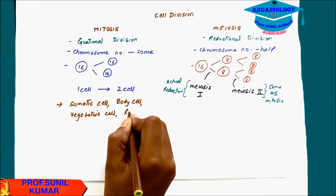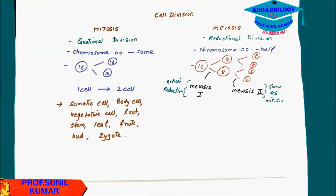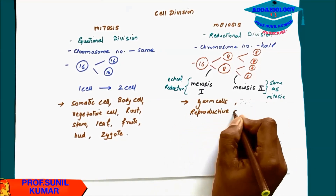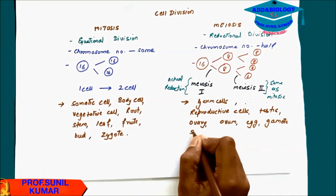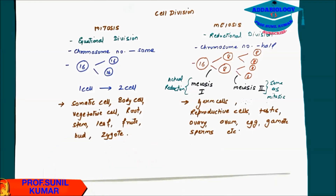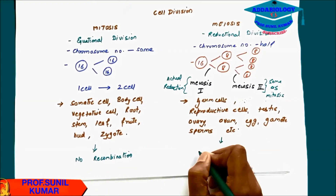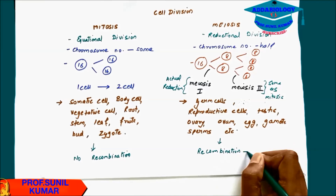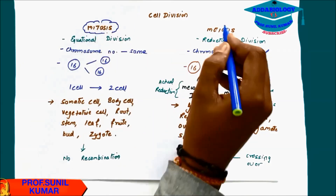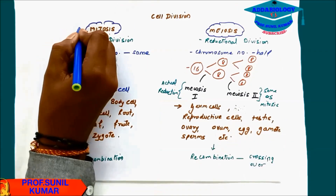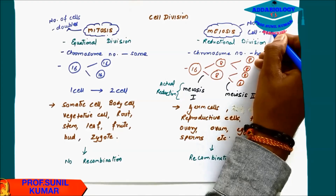In meiosis there is meiosis 1 and meiosis 2. The actual reduction takes place in meiosis 1, and meiosis 2 follows the same pattern as mitosis. Mitosis takes place in somatic cells — body cells, vegetative cells: root, stem, leaf, flower, zygote. Meiosis takes place in germ cells, reproductive cells: testis, ovary, ovum, egg, gametes, sperms. In mitosis there is no recombination, so daughter cells have the same genotype. In meiosis, recombination takes place due to crossing over. In mitosis, cells double with every division; in meiosis, 1 cell gives rise to 4 cells.